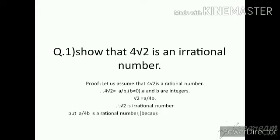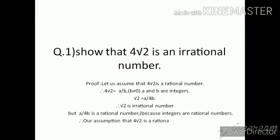But a/(4b) is a rational number because integers are rational numbers. Here √2 = a/(4b), but √2 is an irrational number. Since an irrational number cannot equal a rational number, our assumption that 4√2 is a rational number is wrong. Therefore, 4√2 is an irrational number.